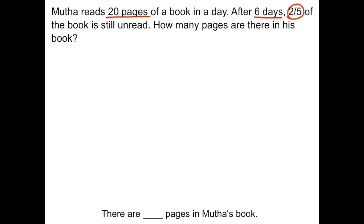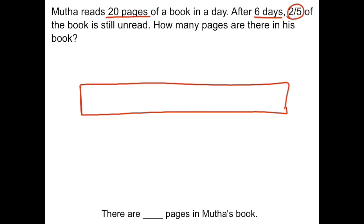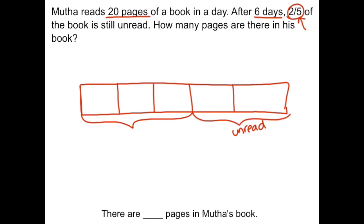We're going to illustrate this by drawing our whole bar. We know that two-fifths of the book is still unread, so I'm going to break this up into five parts because the denominator tells me the number of parts needed to show what's read and unread. We know that two-fifths is unread, which means that three-fifths has been read. The total is all the pages in the book — that's actually what we want to find out. So that's our big question mark.